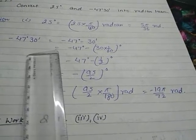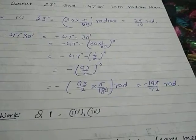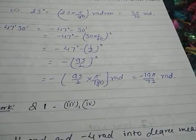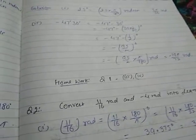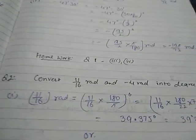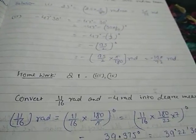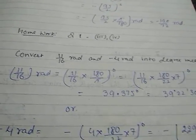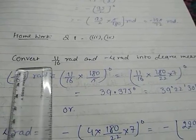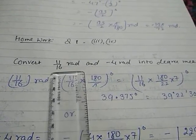Therefore, −47°30′ = −19π/72 radians. This way you have to do the third and fourth parts of Question 1 by yourself. Now Question 2 is: convert 11/16 radians and −4 radians into degree measure.